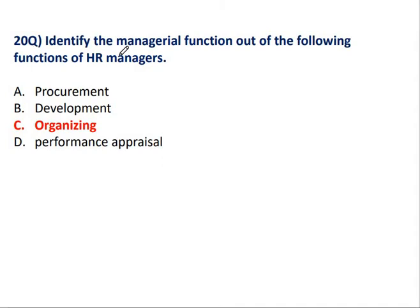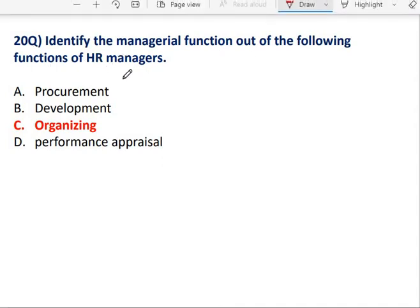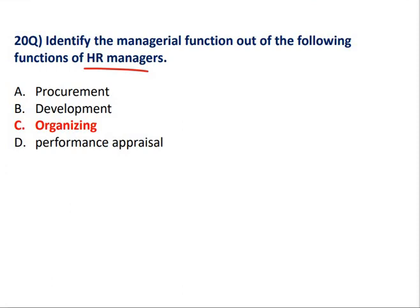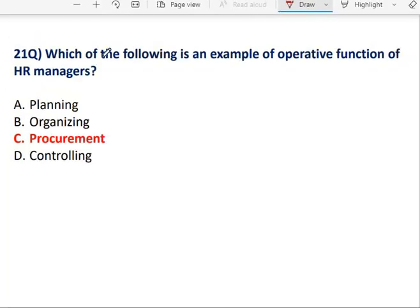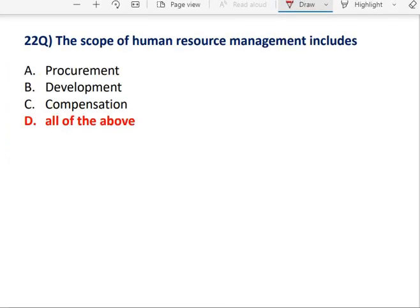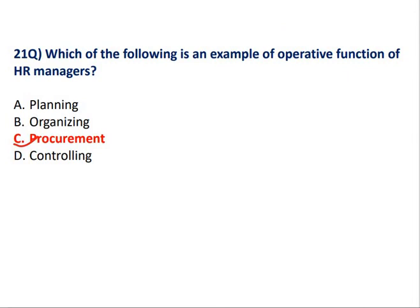Question No. 20: Identify the managerial function out of the following functions of an HR manager. Procurement, Development, Performance Appraisal — यह सारा operative function है HR manager का. But Organizing is the HR manager's managerial function. Question 21: Which of the following is an example of operative function of HR manager? Procurement is the operative function, and Planning, Organizing, Controlling, or Directing are the managerial functions of HR manager. यह question definitely आएगा, क्योंकि managerial function और operative function को अच्छे से elaborate किया हुआ है syllabus में.